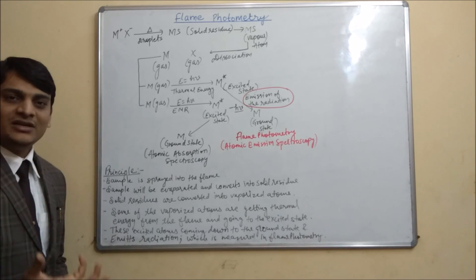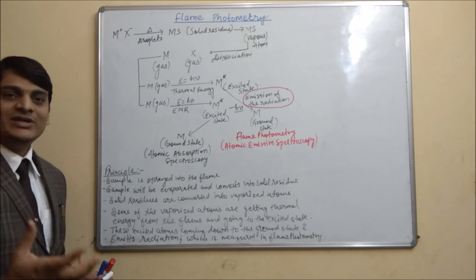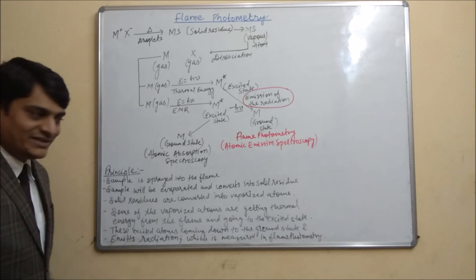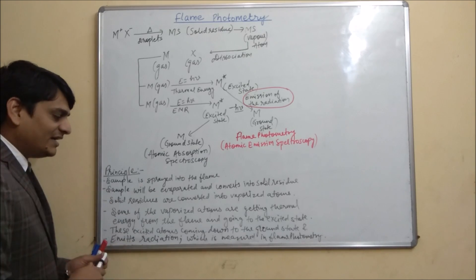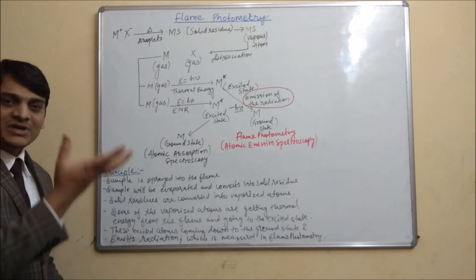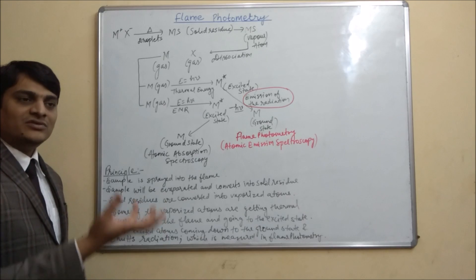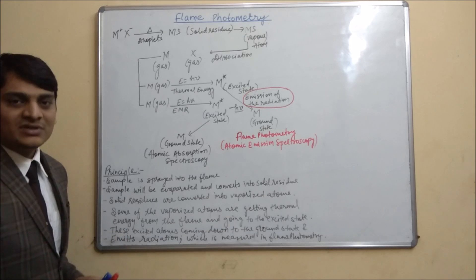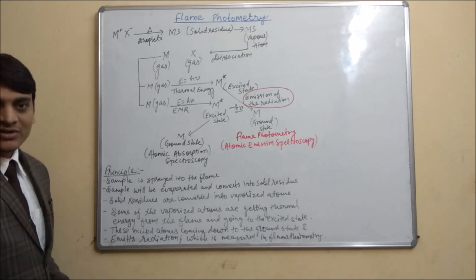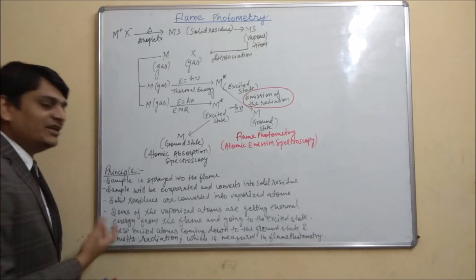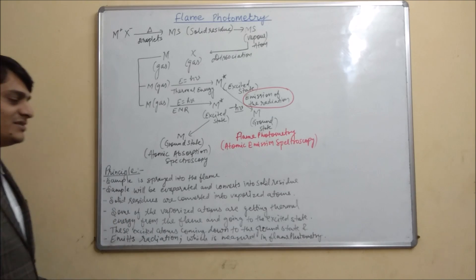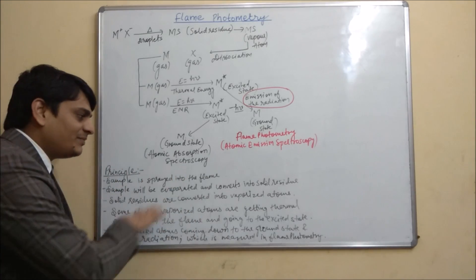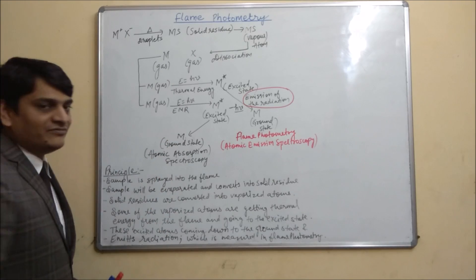From those atoms, some atoms get thermal energy and go to the excited state — a higher energy level. These excited atoms then come down to the ground state. During coming back to the ground state, the atoms emit some radiation. That emitted radiation is measured in flame photometry, and this is the basic concept or principle involved in flame photometry.